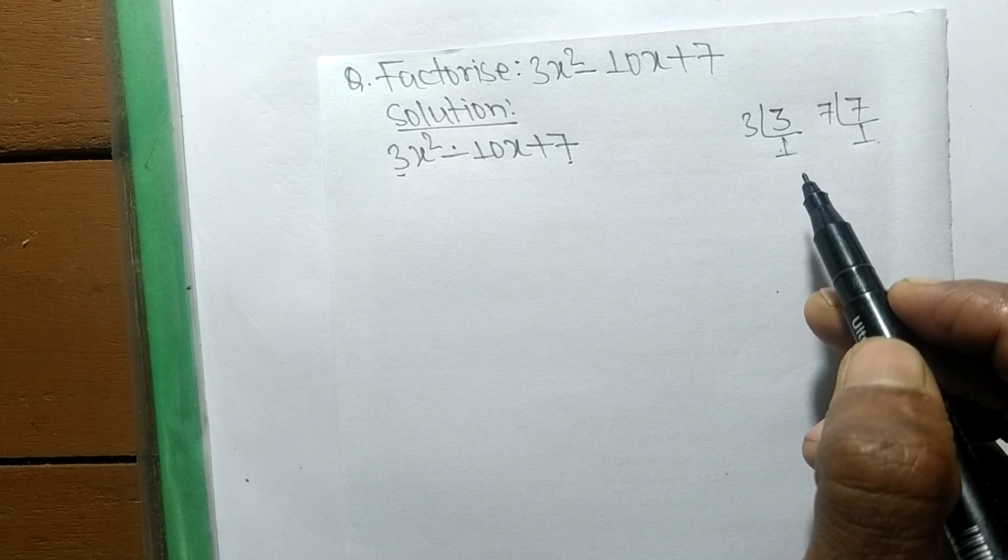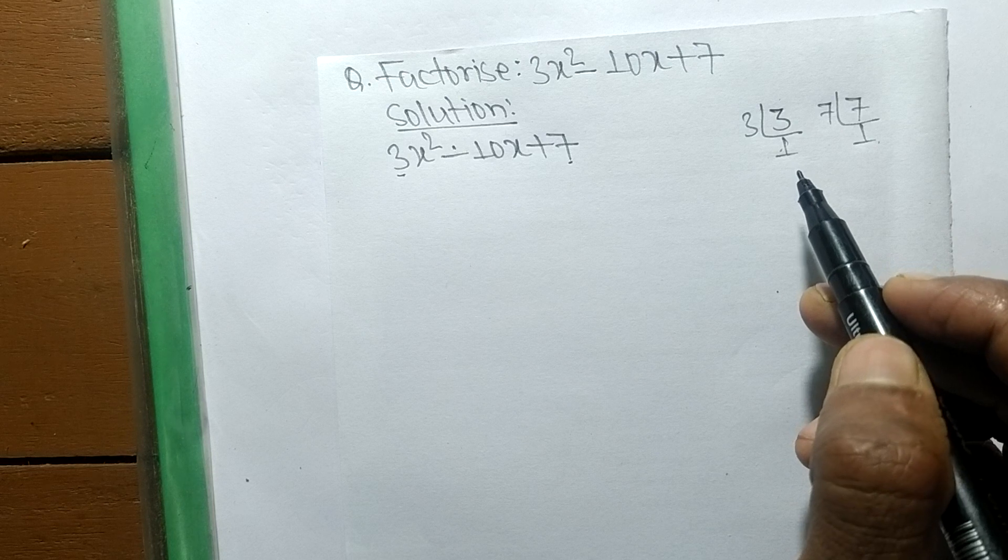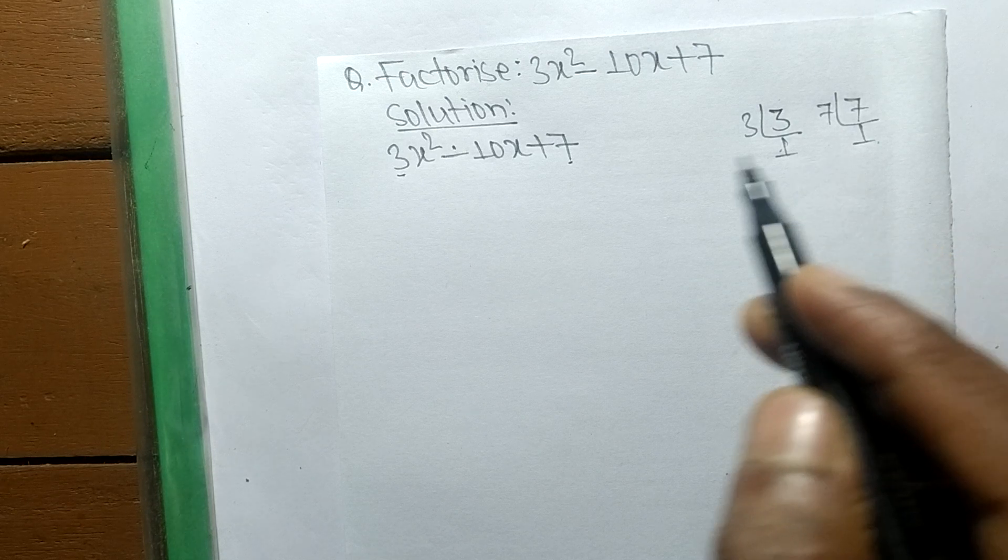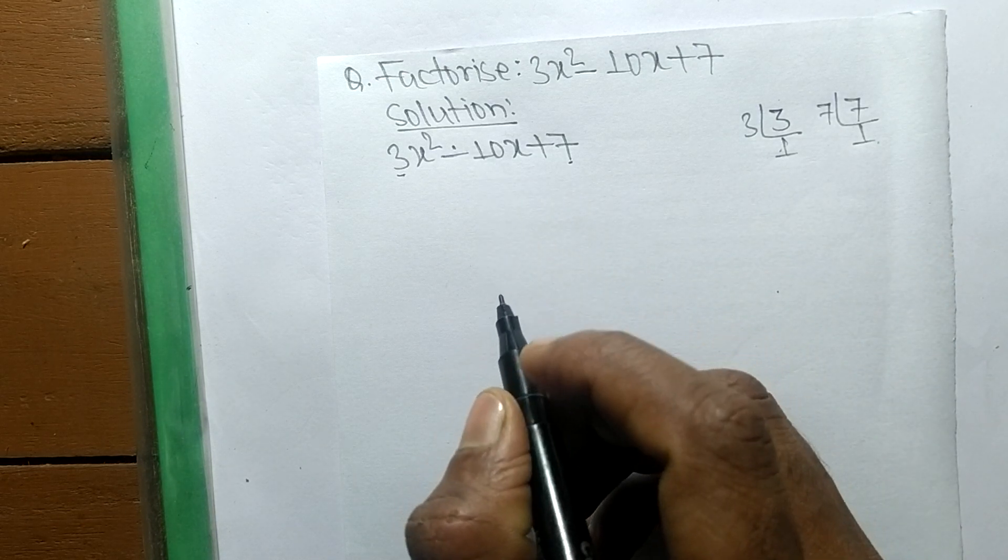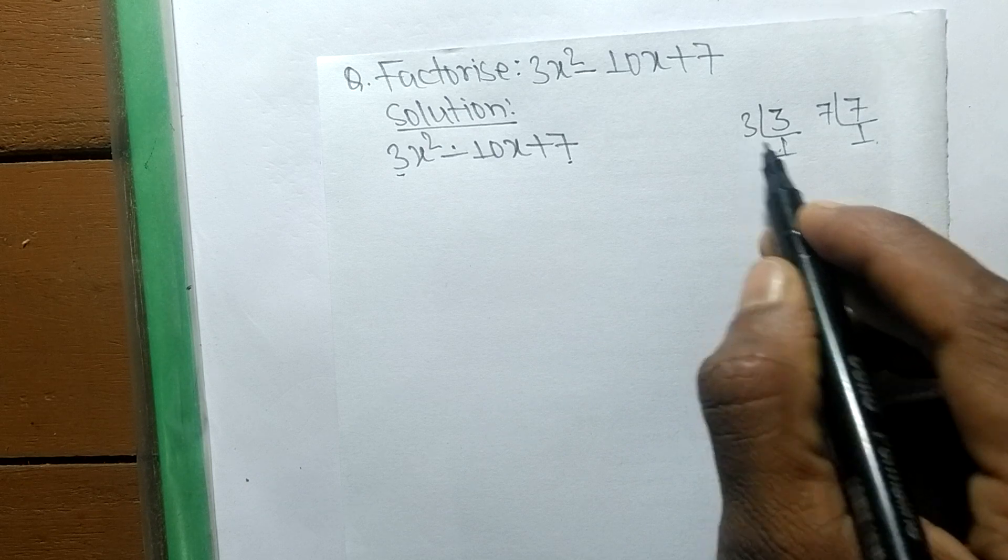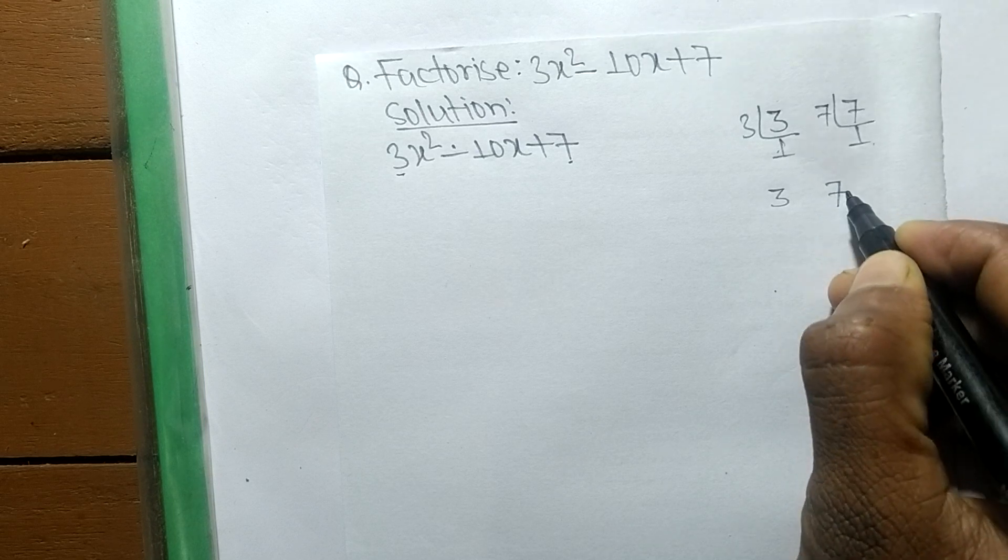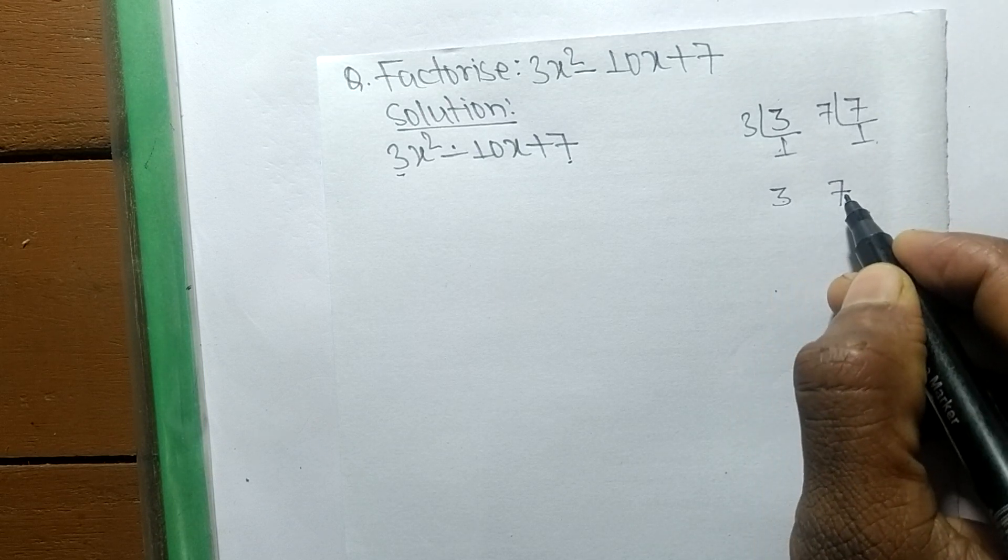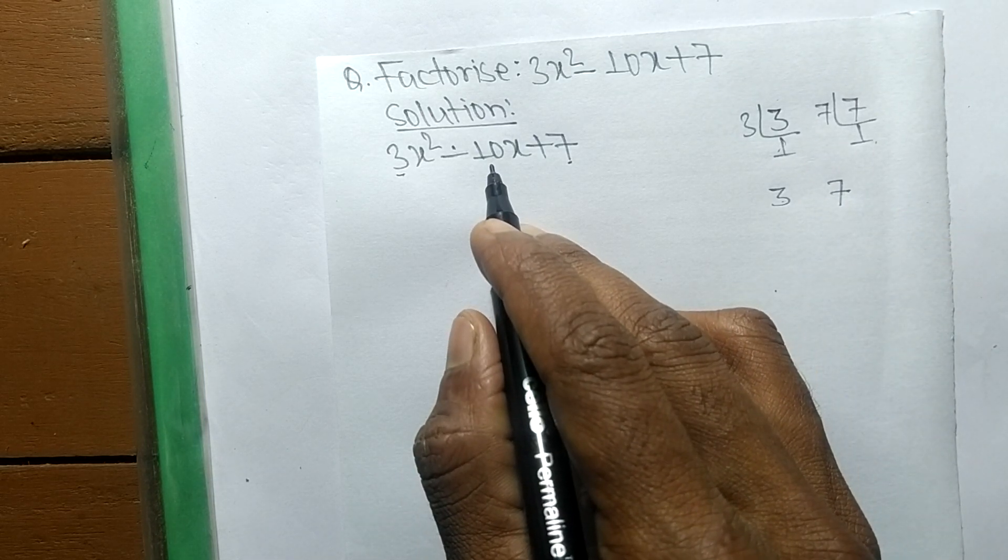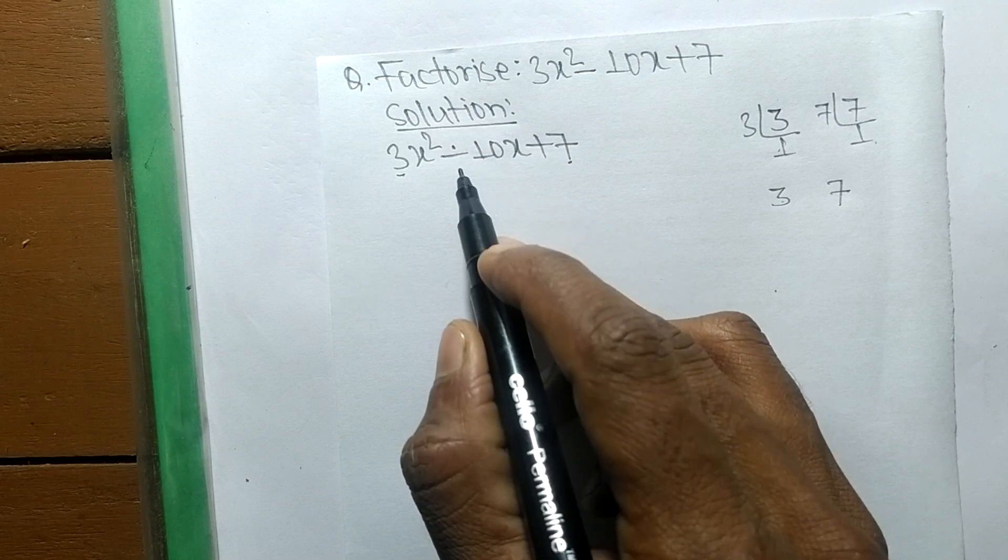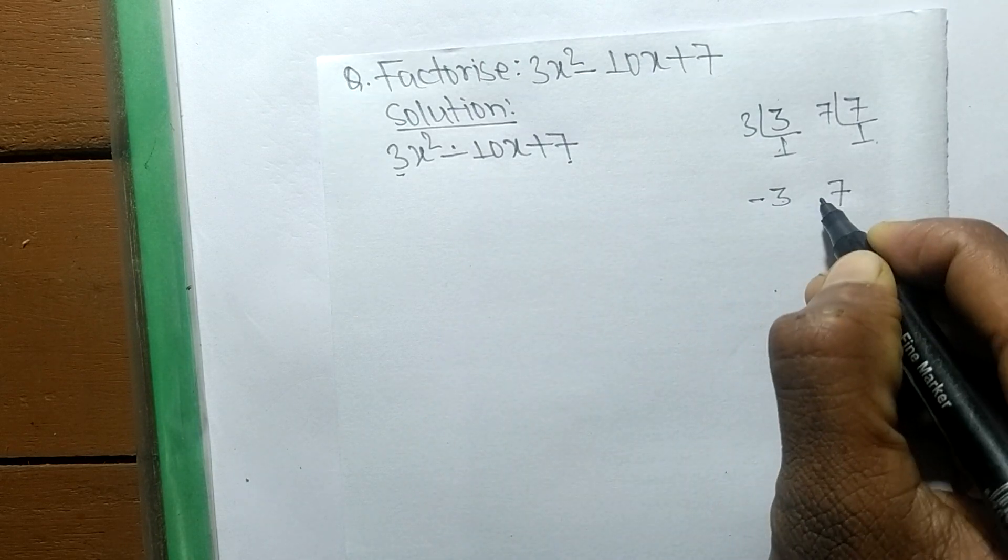we have to find such numbers that when added give us -10. When you multiply 3 times 1, we get 3, and 7 times 1 gives 7. Since 3 plus 7 equals 10, and we need -10, we take -3 and -7.